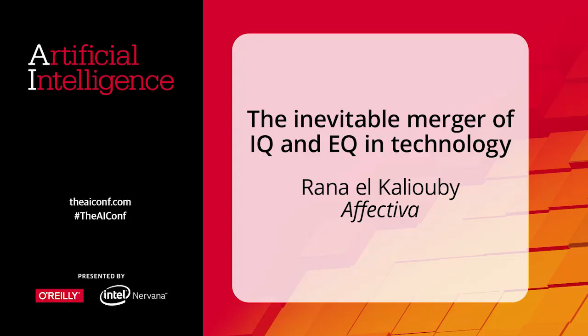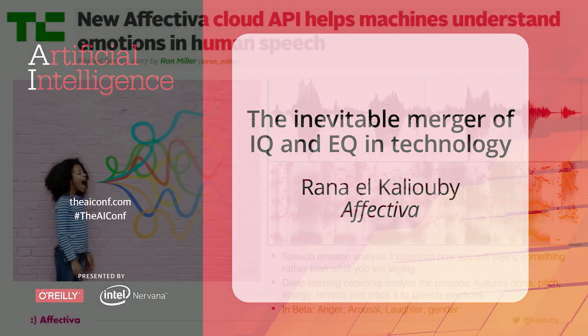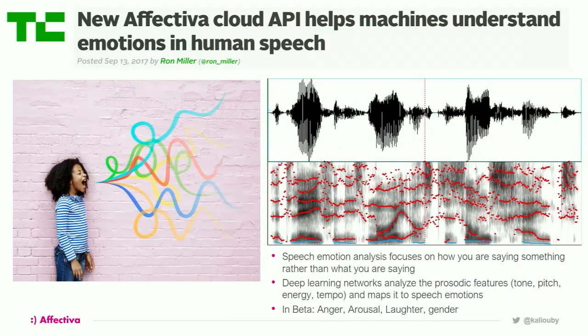We just added speech to the mix. This is about a couple of days old now, where we are able to understand the emotions from your tone of voice, from how you're saying the words. So it's things like tone, energy, pitch, tempo, and loudness. And we're able to map that into a number of emotional states. I'll show you a couple of examples.